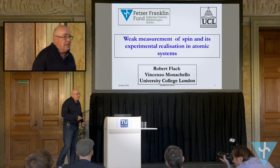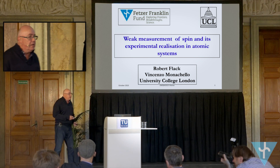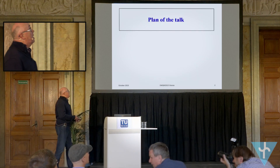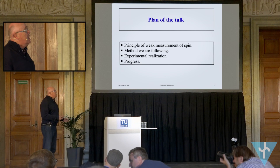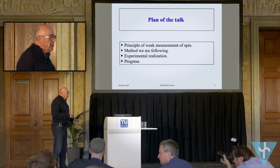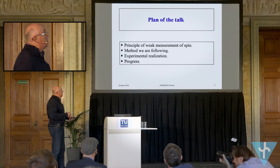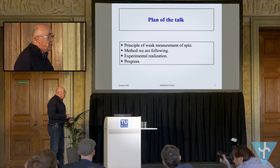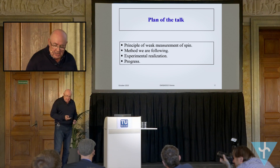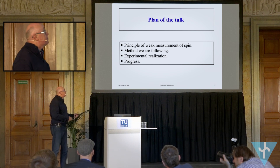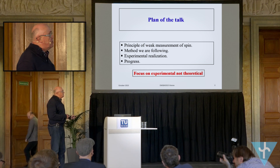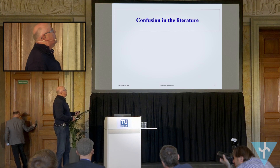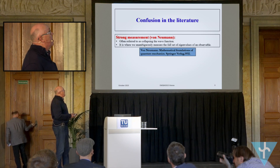What we're going to talk about is how we do the weak measurement of spin, and we're actually going to do it with an atomic system. The plan of the talk: I just want to say a couple of words about weak measurement in general, then talk about the method we're following and how we're putting it together, and finish off by explaining the progress we've made. I'm going to focus on experiment, not theory.